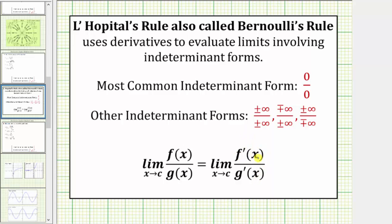The idea is that this limit will be easier to evaluate than the original limit. But again, we can only apply L'Hopital's rule if the limit is in one of these indeterminate forms. If it's not in one of these forms, L'Hopital's rule does not apply.